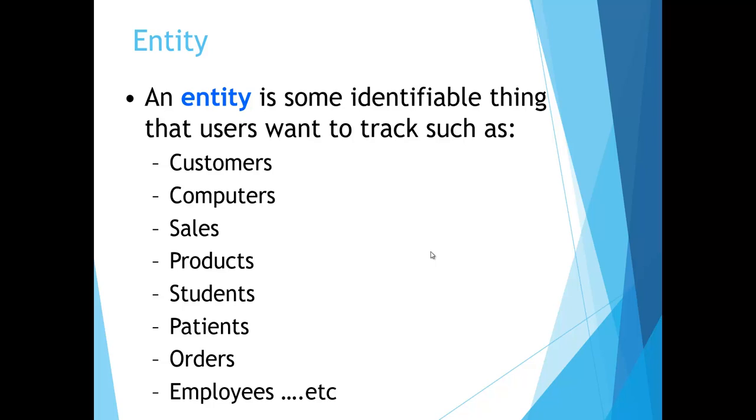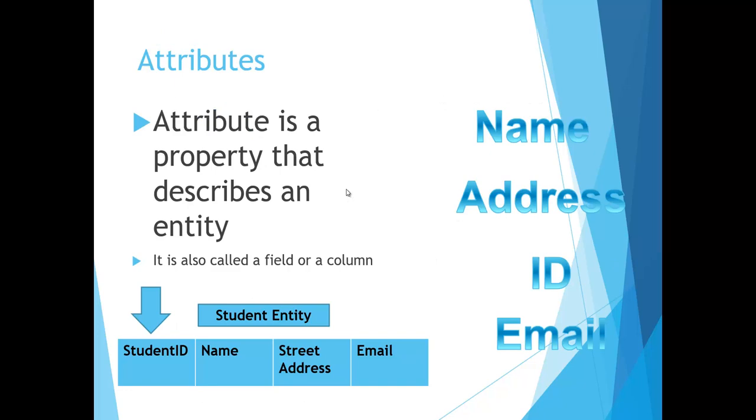Once we identify the entity, we start collecting information about their attributes. And attributes is just a property that describes an entity such as the name. So we have the student, but what's the name of that student? What's their street address, what's their ID, what's their email address, and so on. So we are trying to collect information about that entity that we are dealing with. It's also called field or column.